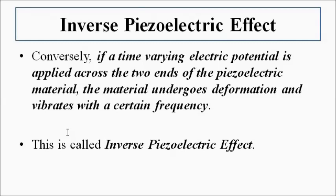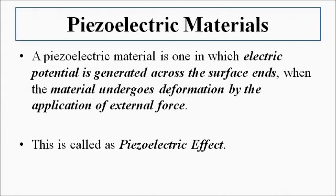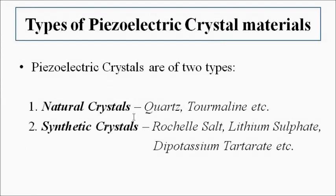There are two types of piezoelectric materials: natural and synthetically designed. Natural examples include quartz and tourmaline, which are commonly used natural crystals. The synthetic ones include Rochelle salt, lithium sulfate, and dipotassium tartrate. These are the piezoelectric crystals commonly used for designing transducers.